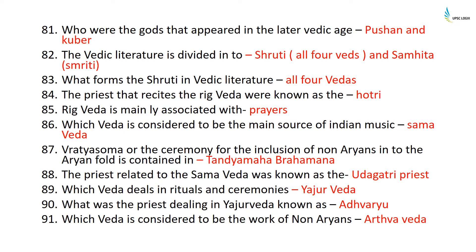The Vedic literature is divided into Shruti and Smriti. The Shruti consists of all four Vedas. The priests who recite the Rig Veda were known as the Hotri. The Rig Veda is mainly associated with prayers. The Samaveda is considered to be the main source of Indian music. The Vratasoma ceremony for the inclusion of non-Aryans into the Aryan fold is contained in the Tandya Mahabrahman.